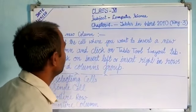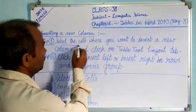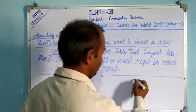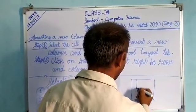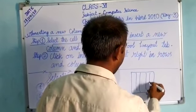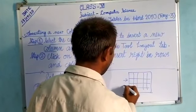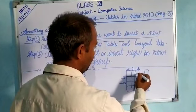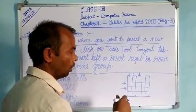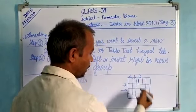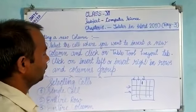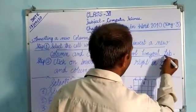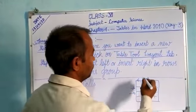Suppose we have this table with columns and rows. If we want to insert a new column, first of all we have to select the cells of the column. After that, we have to click on the Table Tools Layout tab.